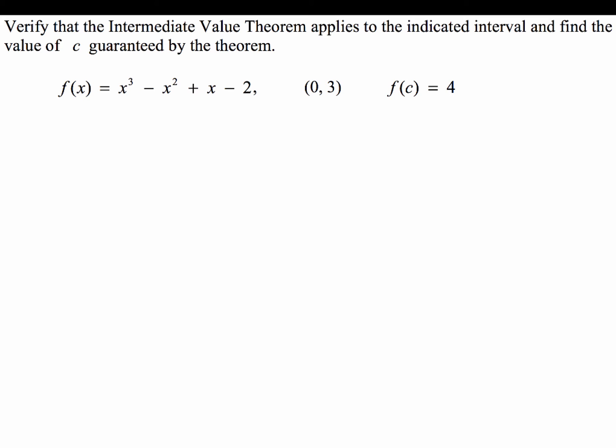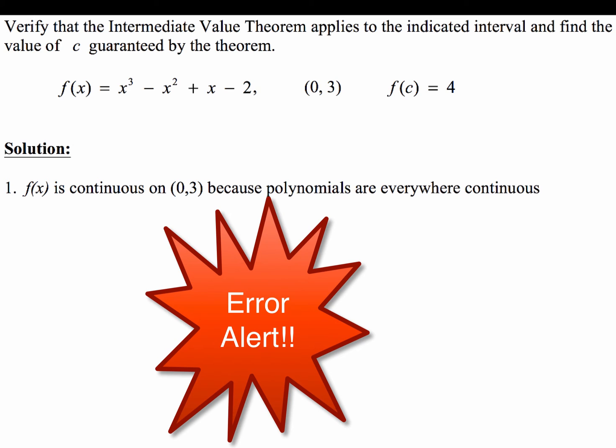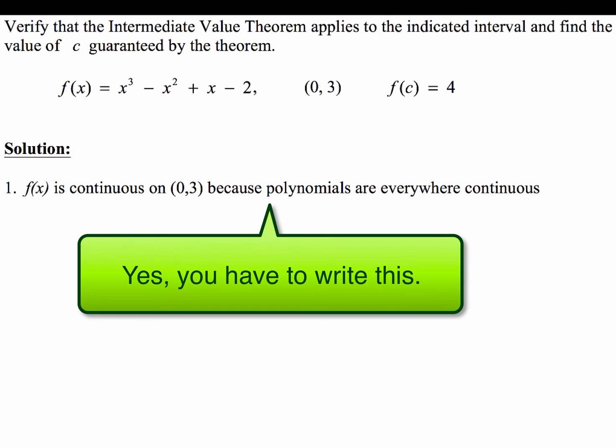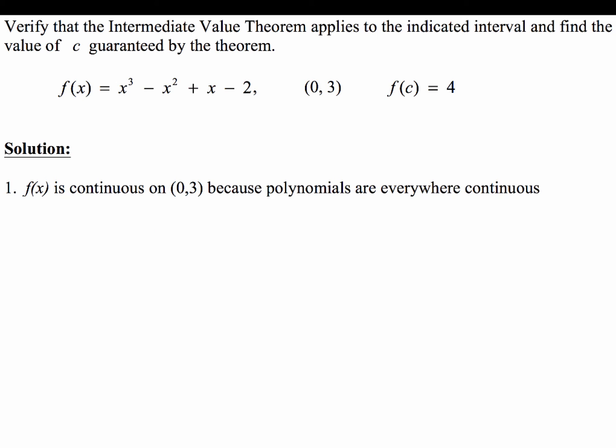First, we're going to show that the IVT applies. This is where most people will make the common mistake. They will forget to state that the function, in this case f(x), is continuous on [0, 3] because polynomials are everywhere continuous. So you need to make sure that you write that step to show that the function is continuous within the interval that you're given. A lot of people drop that.